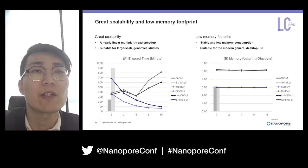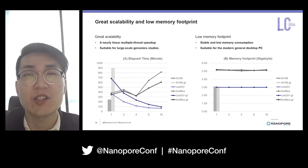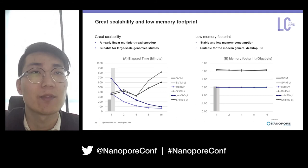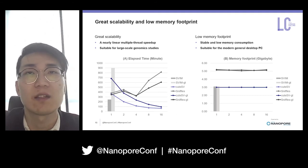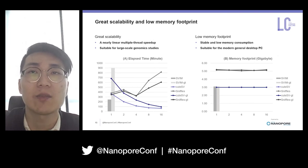The third beneficial feature is greater scalability and low memory footprint. Qtai3 is representative of current structural variation callers in achieving nearly linear multi-thread speedup, and is suitable for large-scale genomic studies. A stable and low memory consumption of three gigabytes indicates that Qtai3 is suitable for modern general desktop computers.